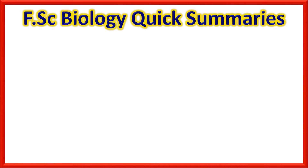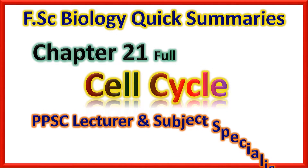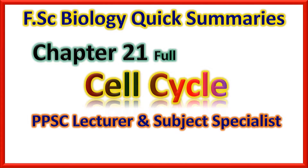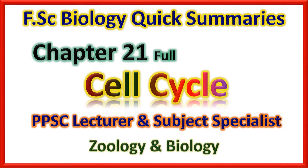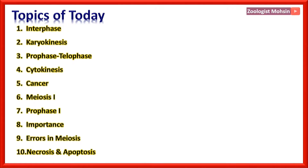FSC Biology Quick Summaries Chapter 21: Complete Self-Cycle, for the preparation of PPSC Lecturer and Subject Specialist Zoology and Biology. In this full chapter review, we shall discuss Interphase, Karyokinesis, Prophase to Telophase, Cytokinesis, Cancer, Meiosis 1, Prophase 1 in detail, and errors in Mitosis/Meiosis like syndromes, and finally Necrosis and Apoptosis.